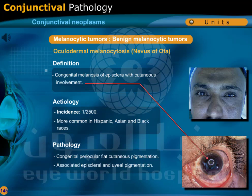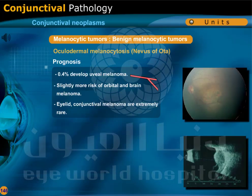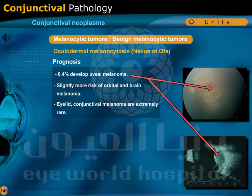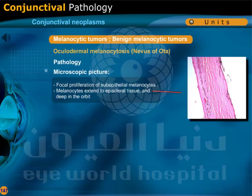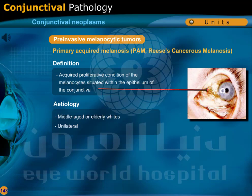Oculodermal melanocytosis, or nevus of Ota, is congenital melanosis of the episclera with cutaneous involvement. It occurs in 1 in 2,500 people and is more common in Hispanic, Asian, and Black races. There is congenital periocular flat cutaneous pigmentation with associated episcleral and uveal pigmentation. 0.4% of cases develop uveal melanoma. There is a slightly increased risk of orbital and brain melanoma, while eyelid and conjunctival melanoma are extremely rare. Microscopically, there is focal proliferation of sub-epithelial melanocytes extending to episcleral tissue and deep into the orbit.